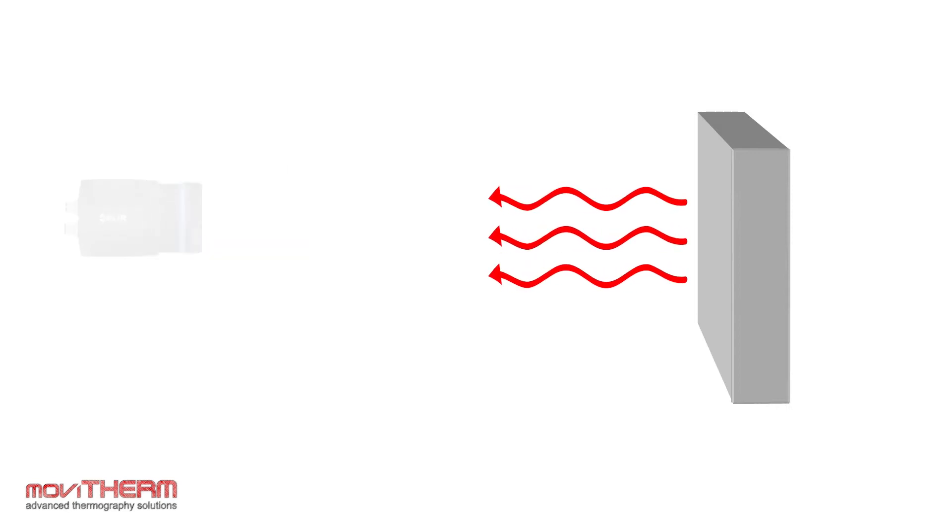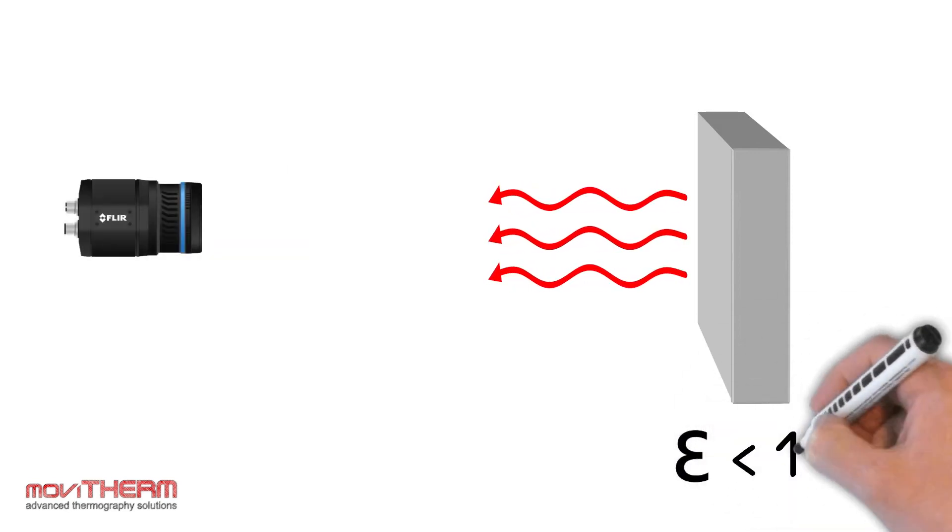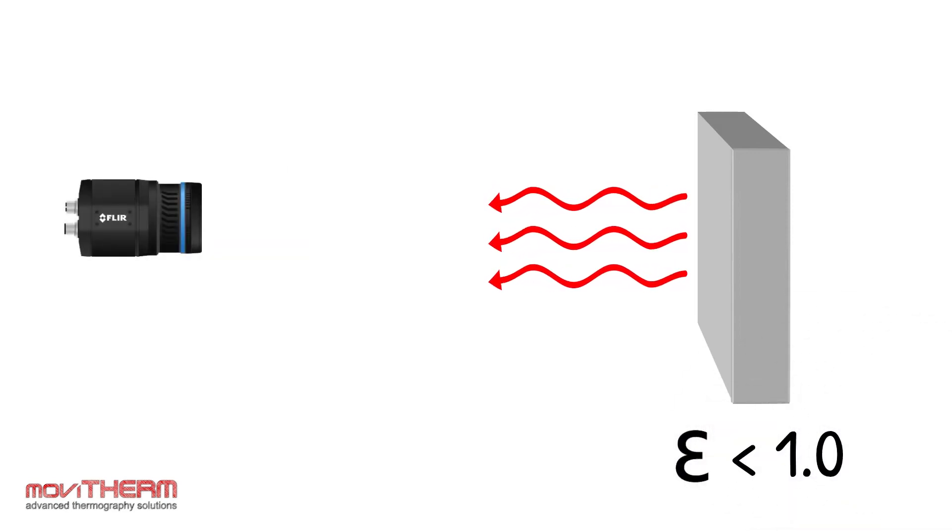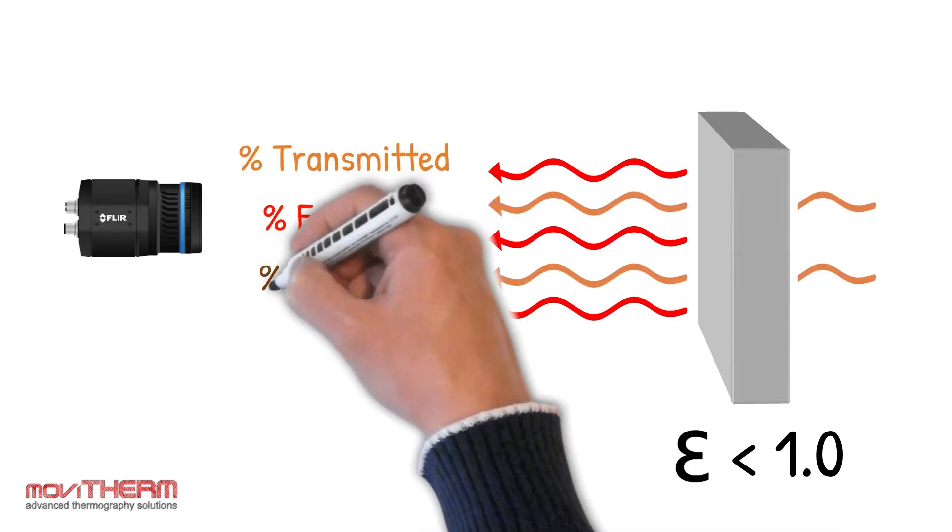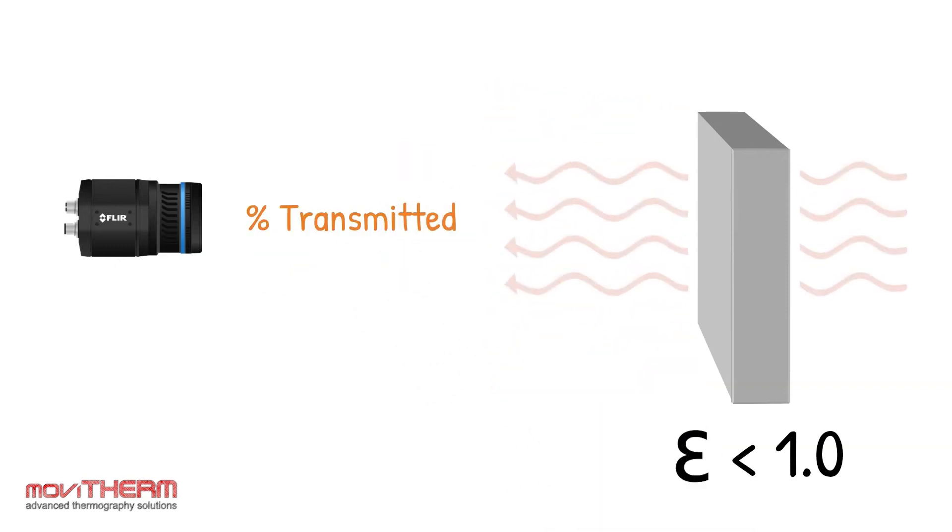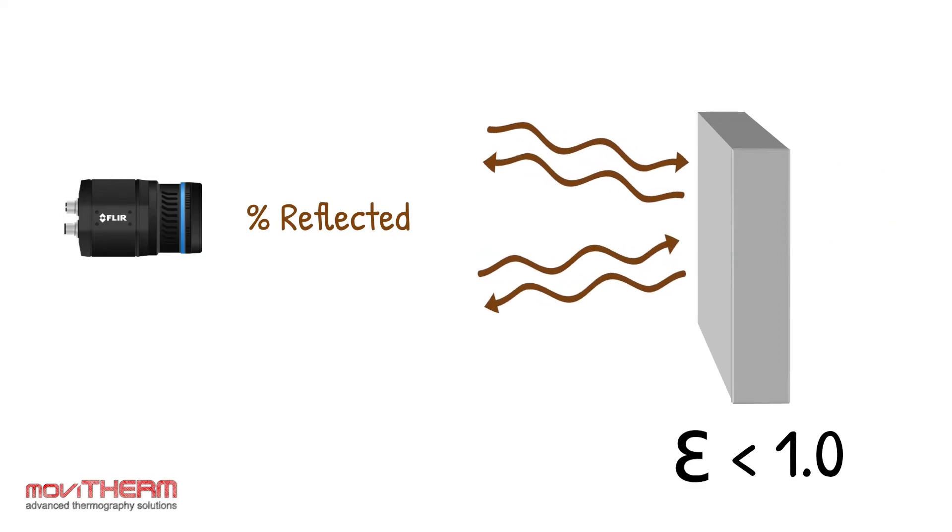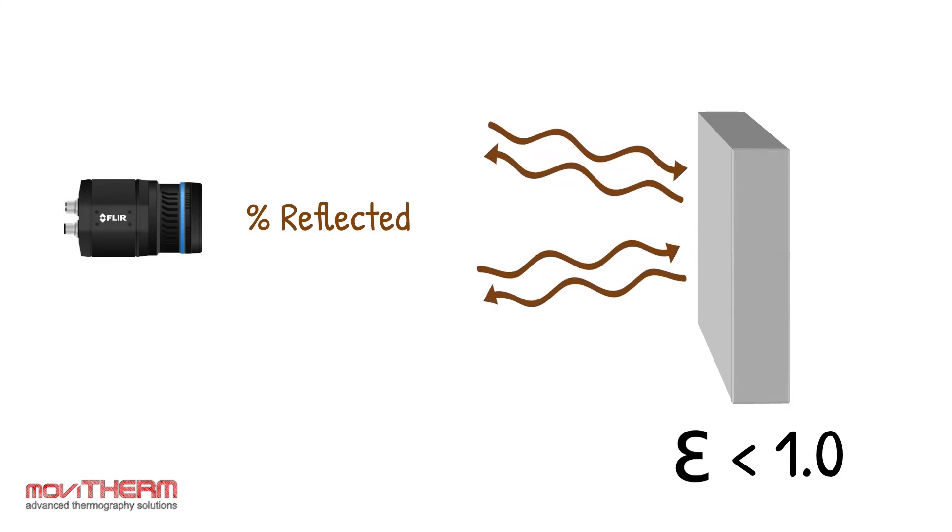As all objects are imperfect emitters, the total radiation from an object could be a combination of emitted, transmitted, and reflected. Transmitted radiation is radiation that passes through the object of interest, like seeing the light pass through a glass window. Reflected radiation is radiation from a source in front of the object that reflects off the object's surface, like seeing your image reflected off the surface of a mirror.